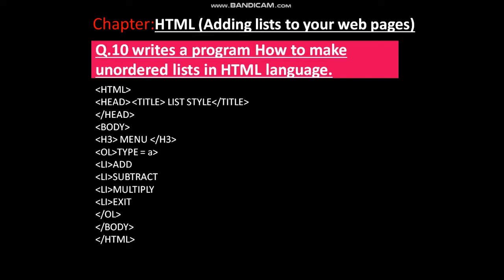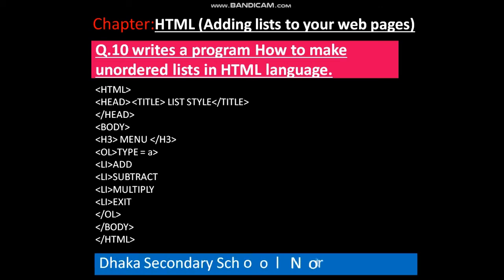Now write the program — how to make an unordered list in HTML language. The program is: html, head, title, close the head tag, body, h3 menu, ul, then li Add, li Subtract, li Multiply, li Exit, close the ul, close the body, and close html.